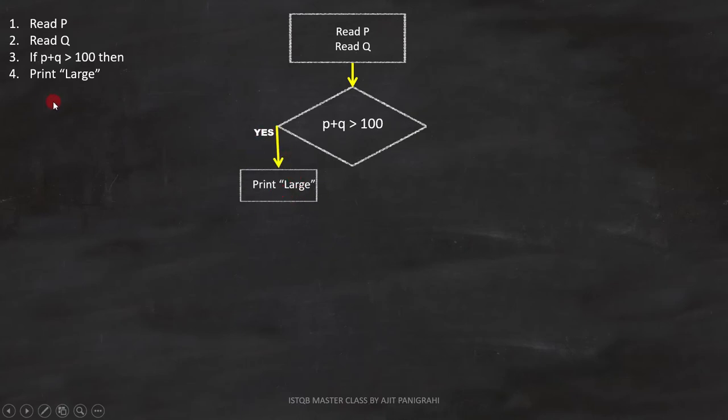Line number 5 is End If. Here, the condition number 3 ends, and we have to represent it like this in the flowchart.